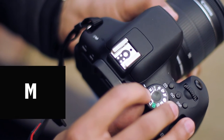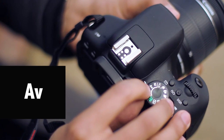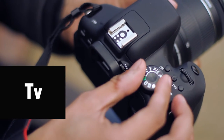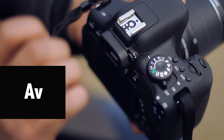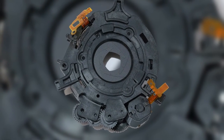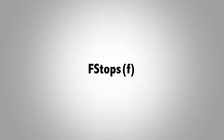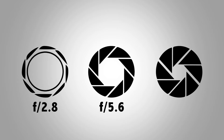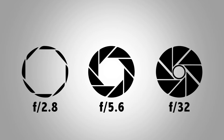One is the M that stands for manual mode, the other one is AV, that's the aperture value, and the other one is TV, that is the time value. First of all, we are going to start with the aperture value. Aperture is a hole through which light passes into the camera sensor. The size of the aperture is measured using f-stops. The default f-stop for most camera lenses is 5.6. The lower numbers like 2.8 actually denote a bigger hole size for the aperture, while the higher numbers like 32 actually denote small aperture sizes.